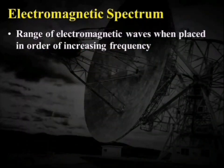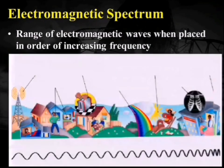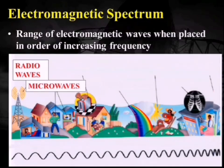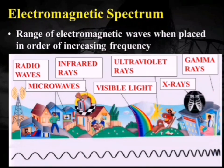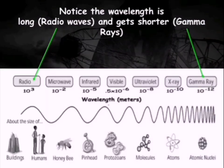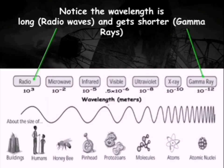If we arrange electromagnetic waves in order of increasing frequency, the longest wavelength corresponds to radio waves, then microwaves, then infrared rays, then visible light, then ultraviolet rays, then X-rays, and the shortest wavelength and highest frequency corresponds to gamma rays. In this diagram, the longest wavelength — 10³ meters — corresponds to radio waves, and the shortest — 10⁻¹² meters — corresponds to gamma rays.